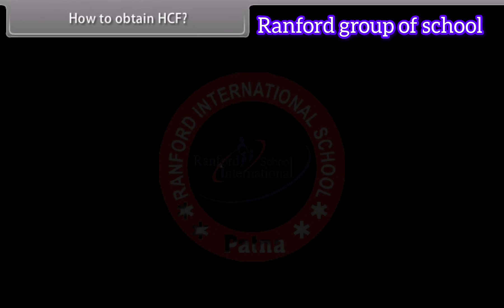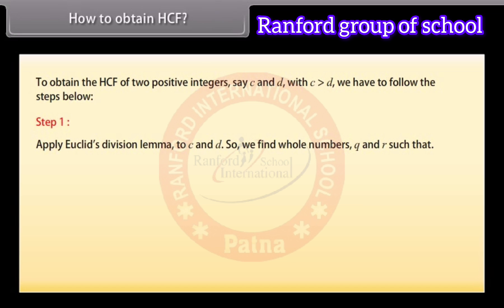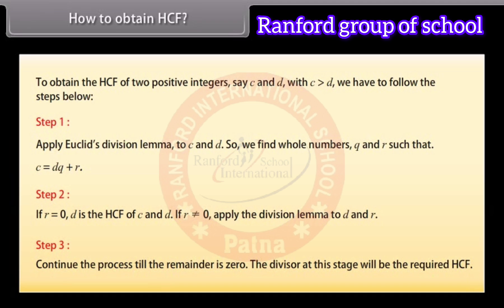To obtain the HCF of two positive integers, say C and D, with C greater than D, follow the steps below. Step 1: Apply Euclid's division lemma to C and D to find whole numbers Q and R such that C equals DQ plus R. Step 2: If R equals 0, then D is the HCF of C and D. If R is not equal to 0, apply the division lemma to D and R. Step 3: Continue the process until the remainder is 0. The divisor at this stage will be the required HCF.